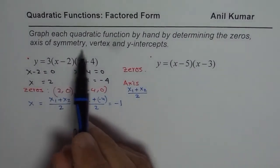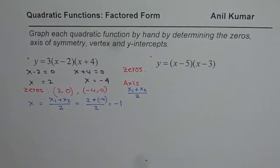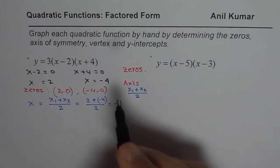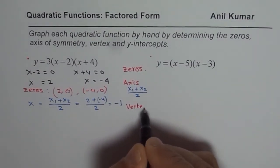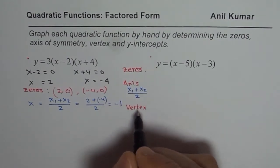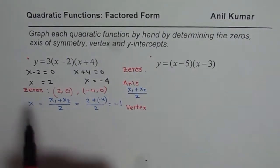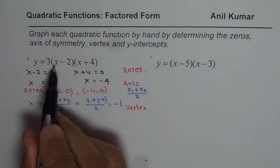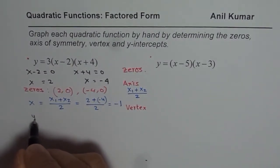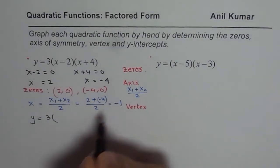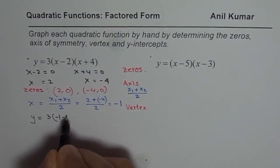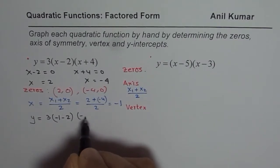Once you find the axis of symmetry, you can find the vertex. How do you find the vertex? The vertex is a point on the axis of symmetry. So what do we do? We substitute the value of the axis of symmetry into the equation and find the y value. So y equals 3 times - the axis of symmetry is minus 1, so we substitute minus 1 here and calculate the y value.